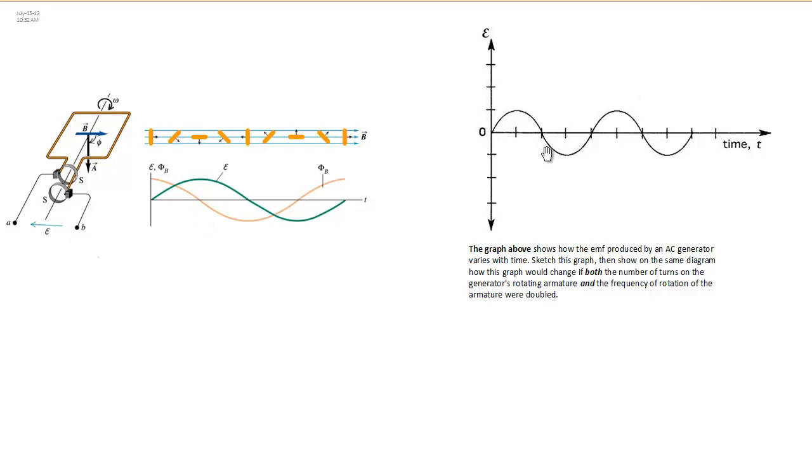So, here's our graph showing our induced EMF for an AC generator as it's rotating with time. The question states, how would this graph change if both the number of turns on the armature and the frequency of rotation is doubled?